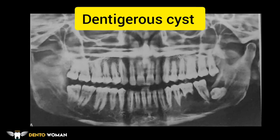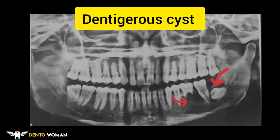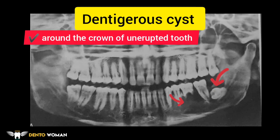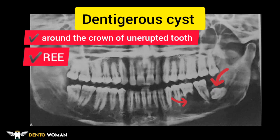This panoramic radiograph shows a dentigerous cyst in relation to the lower left third molar. A second lesion appears to involve the lower premolar and first molar, resorbing the involved teeth. The two radiolucencies seen on the radiograph were actually continuous on the lingual aspect, sparing the tooth-supporting bone and buccal cortex of the third molar. The dentigerous cyst forms around the crown of an unerupted tooth; it begins when fluid accumulates in the layers of reduced enamel epithelium or between the epithelium and crown of the unerupted tooth.